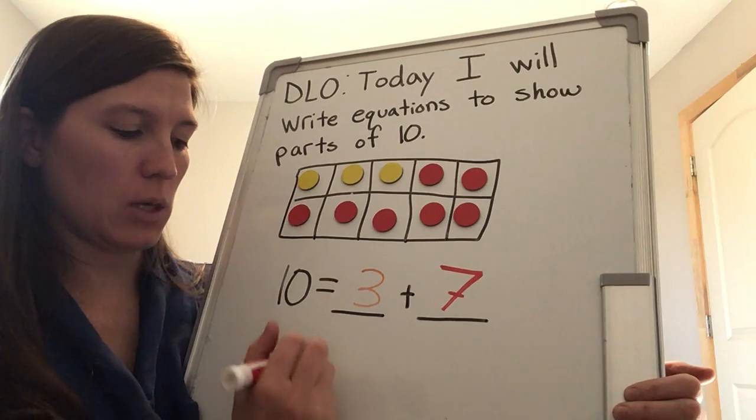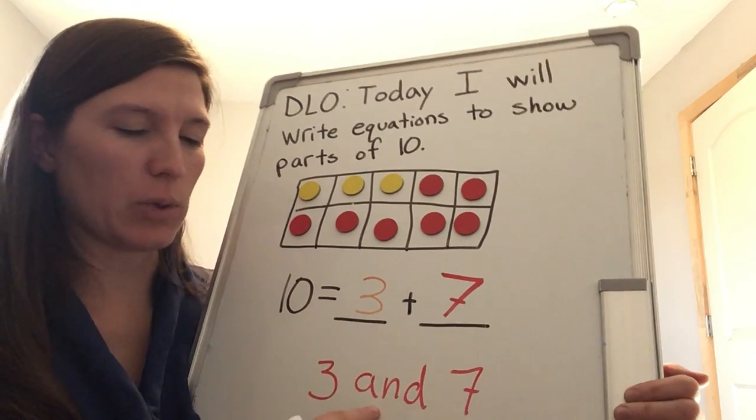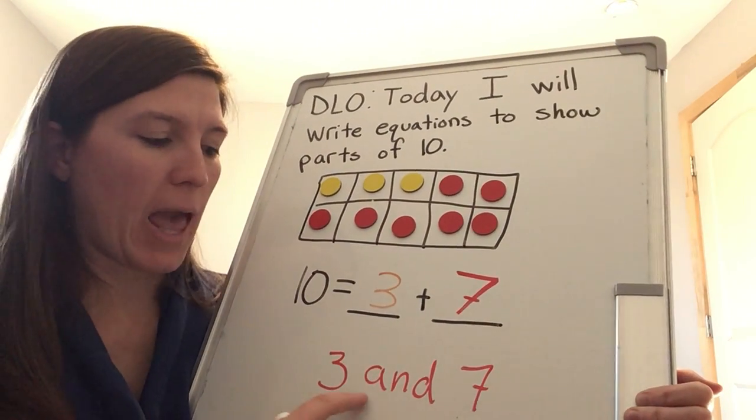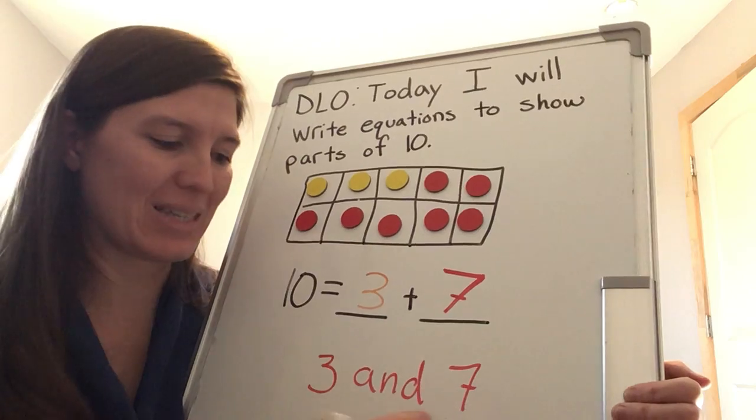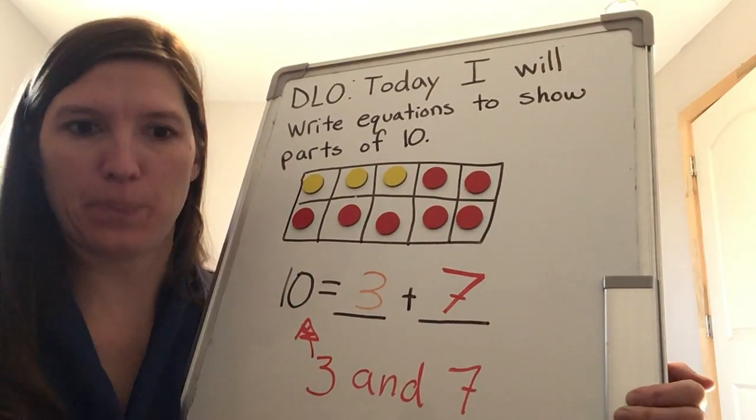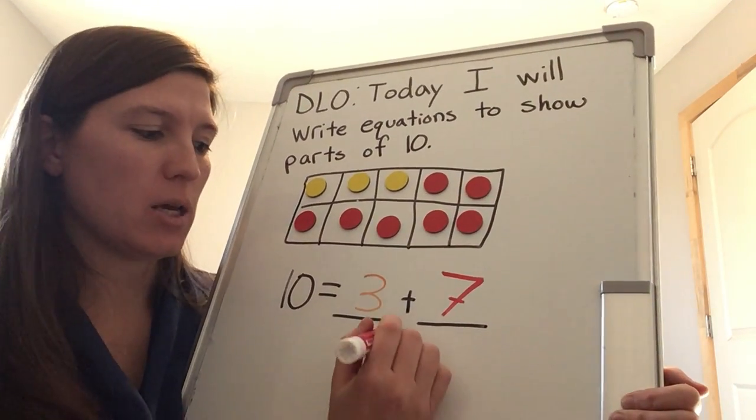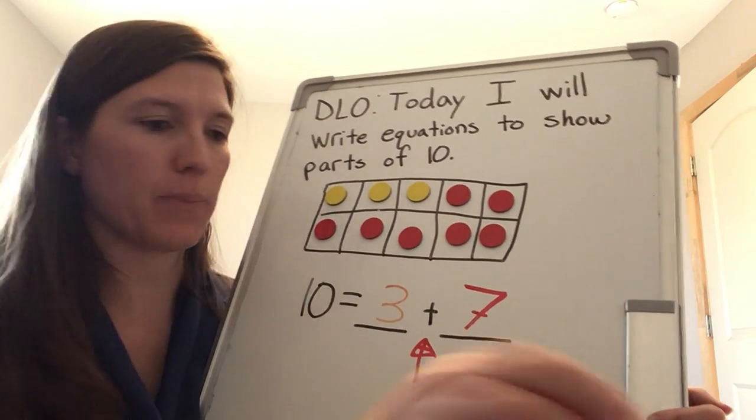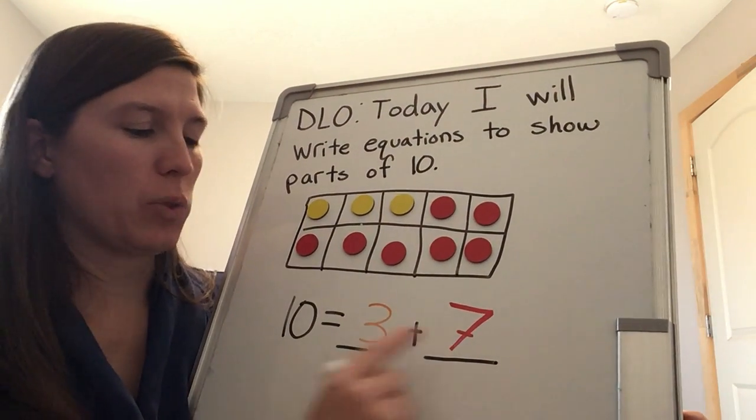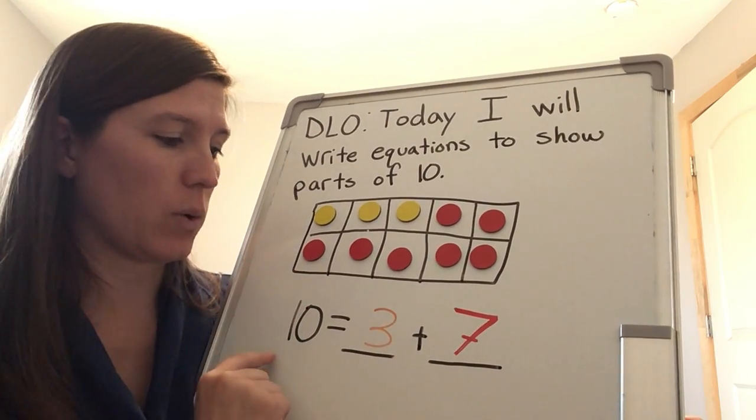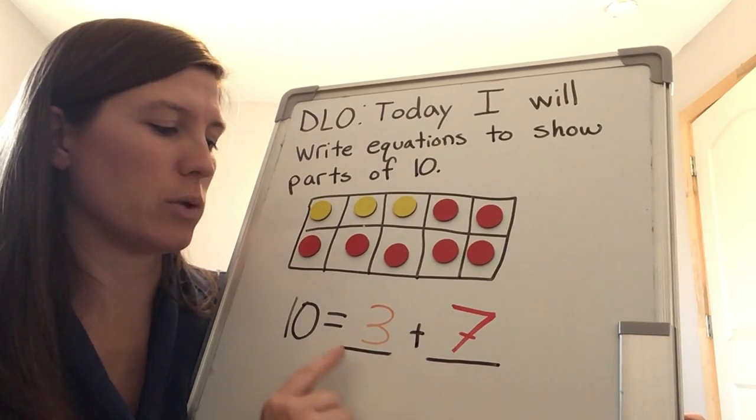So yesterday we had, it would have been written like this. Three and seven. And in the sight word song that we used to sing a long time ago, and brings things together like rain and cloudy weather. But it brings things together. Three and seven together makes 10. So yesterday we wrote the words. Now we're writing it in an equation. So when we hear the word and, it's referring to plus. So I showed a group of three. I showed a group of seven on my 10 frames with two different colors. And then I wrote a decomposing equation to show both parts of 10. 10 equals three plus seven.